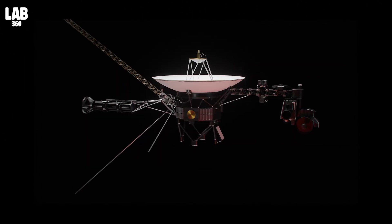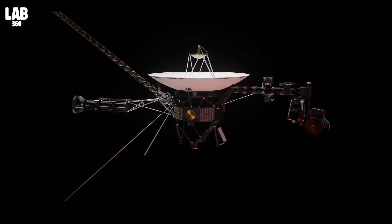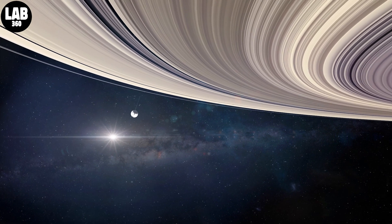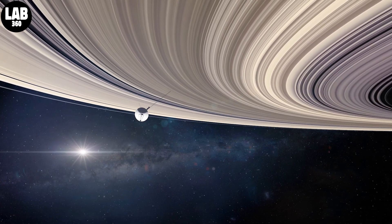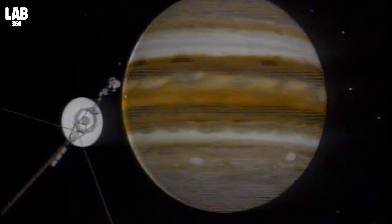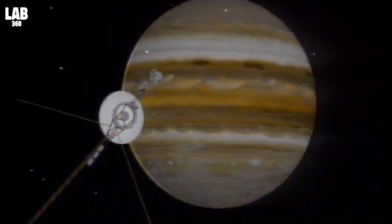Voyager has already relied on backup systems to last as long as it has. In 2017, the probe fired thrusters that were used during its initial planetary encounters during the 1970s, and they still worked after remaining unused for 37 years.